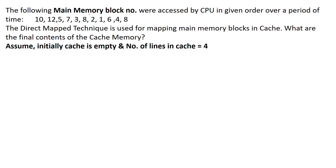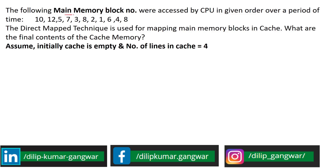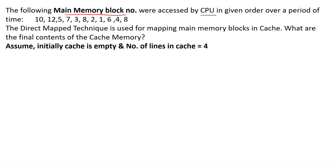This is the question. We are given some blocks of the main memory and they are accessed by the CPU in this order. First, block number 10 is accessed by the CPU, then 12, then 5, then 7 and so on. In other words, the data present inside block number 10 is accessed first, then the data in block number 12, and so on.